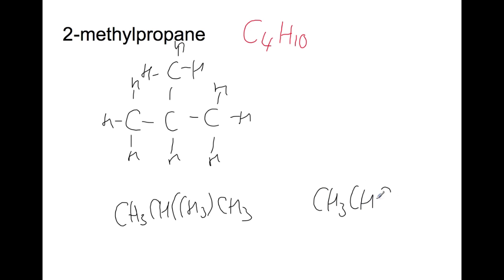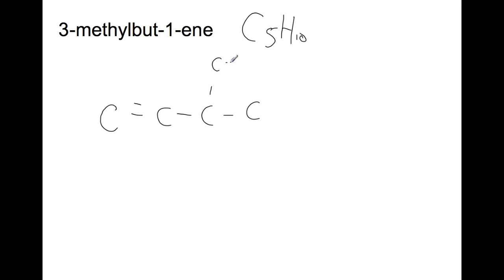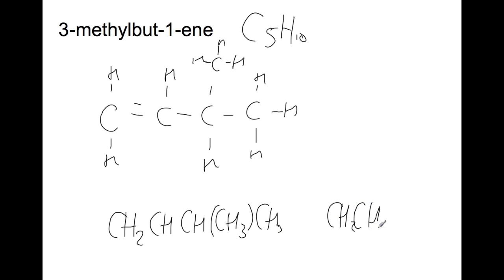Alternatively, you can shorten down the main section and show the branch separately. For 3-methylbutene, which has the formula C5H10, we start with four carbons in a row, double bond between carbons one and two, and a methyl branch on carbon three. Fill in so every carbon has four bonds. The shortened structural formula is CH2=CH–CH(CH3)–CH3.